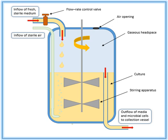If a dilution rate is chosen that is higher than μ max, the cells cannot grow at a rate as fast as the rate with which they are being removed, so the culture will not be able to sustain itself in the bioreactor, and will wash out.